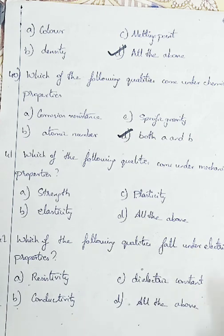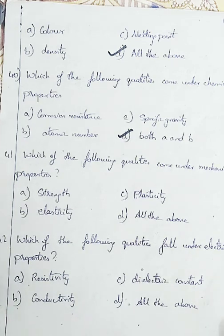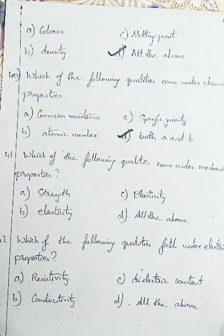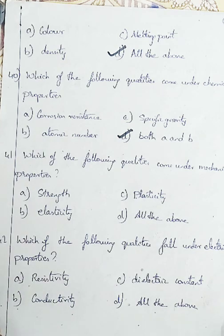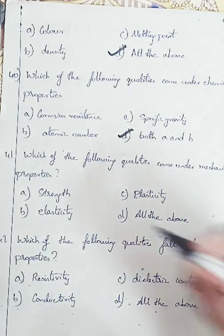Question number 41: which of the following quantities comes under mechanical properties? Option A: strength, Option B: elasticity, Option C: plasticity, Option D: all the above. Strength, elasticity, and plasticity are all mechanical properties. So we will be going with Option D, all the above.